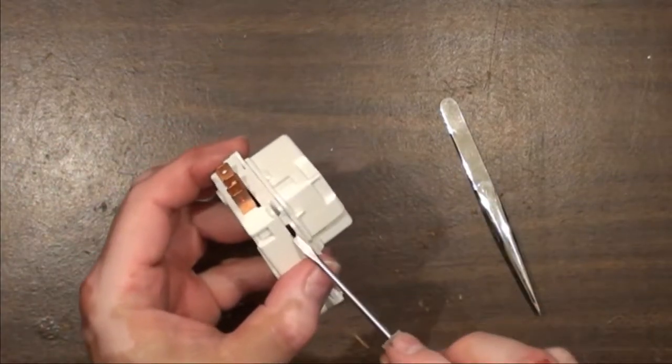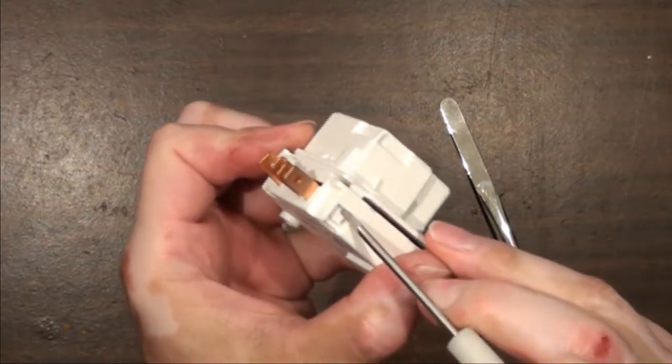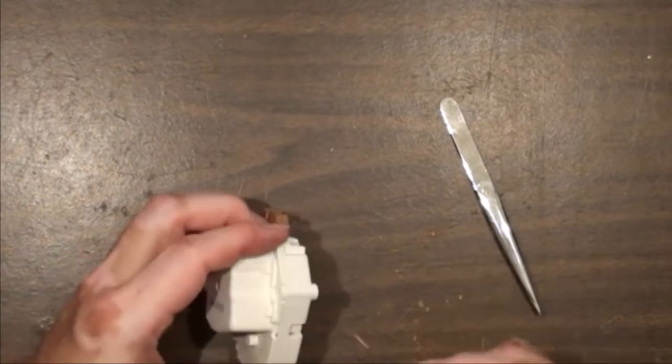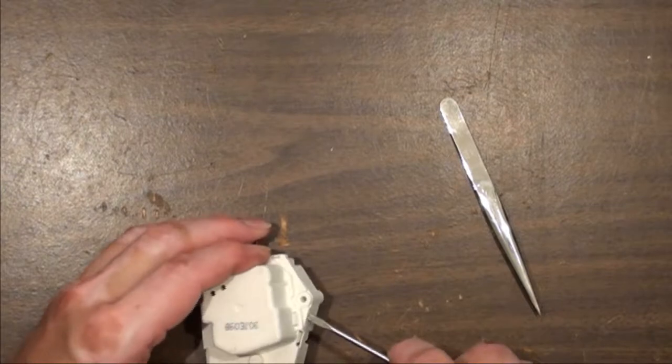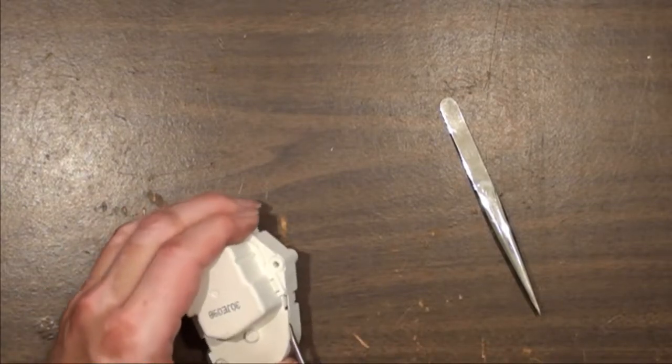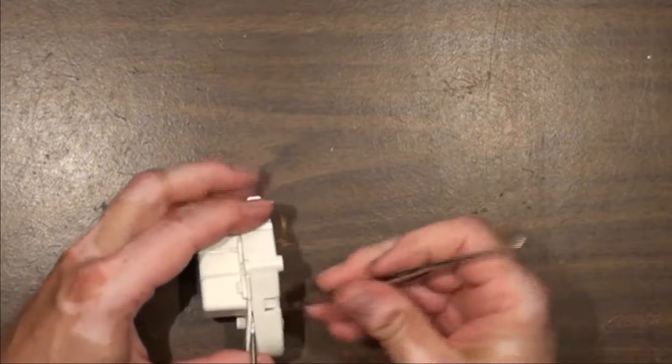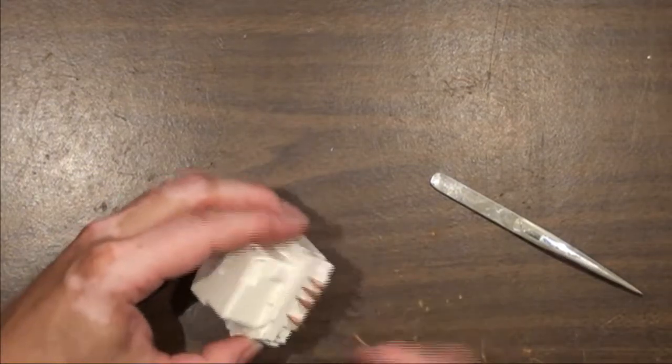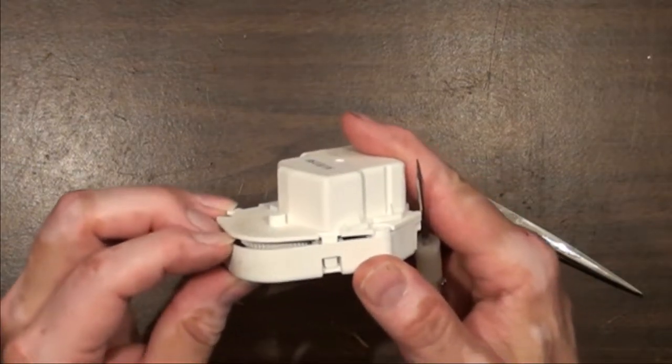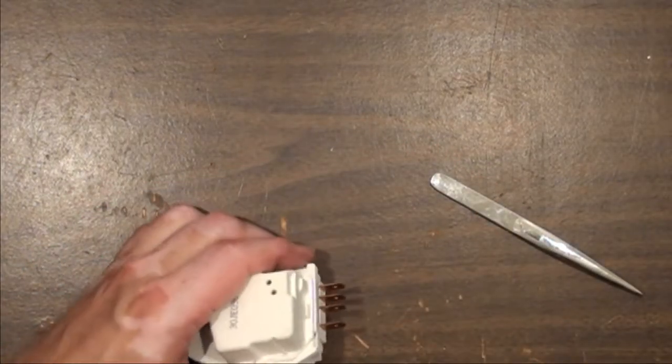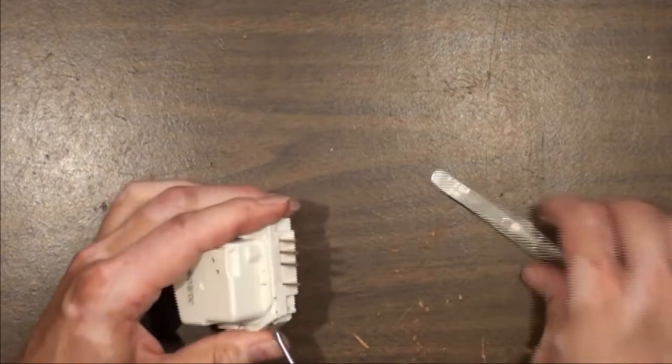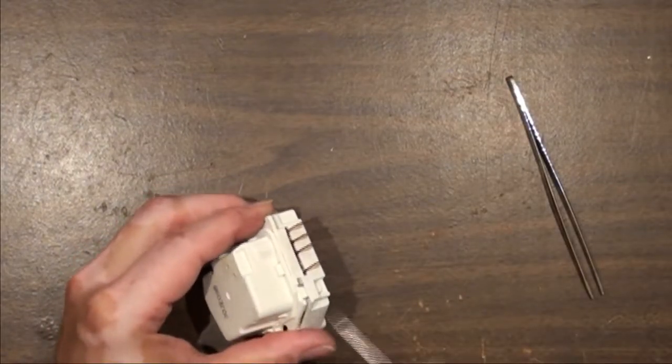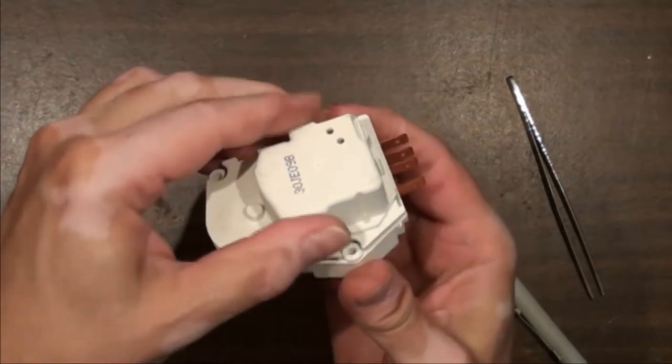I'm prying here, but at the same time I'm pushing down on this tab right here because it's got a little notch that it catches on right there. We'll find out if this is the wrong way to take it apart or not. I don't know if there's anything in here you can service. It looks like there's a gear, you can see a gear down in there. Let's see if something pops out all over the place.